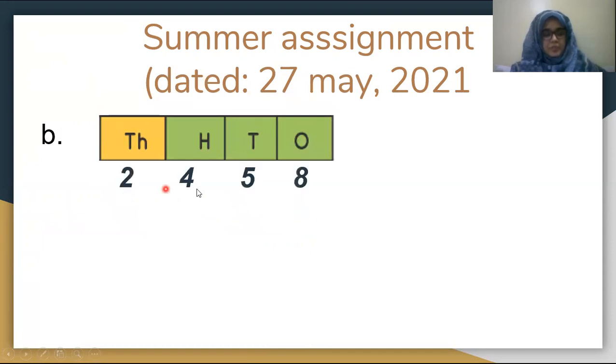Part B is 2458 plus 7525. 8 plus 5 is 13. Write 3 below and carry 1. 1 plus 5 is 6, 6 plus 2 is 8. 4 plus 5 is 9, and 2 plus 7 is 9. 9983 is your answer for part B.